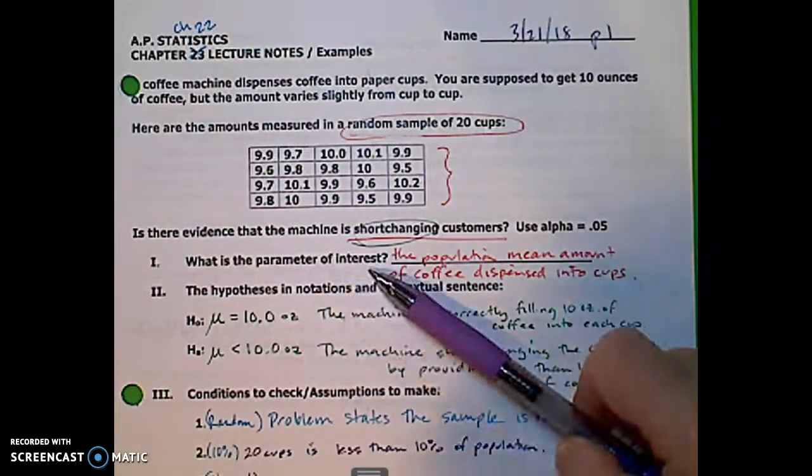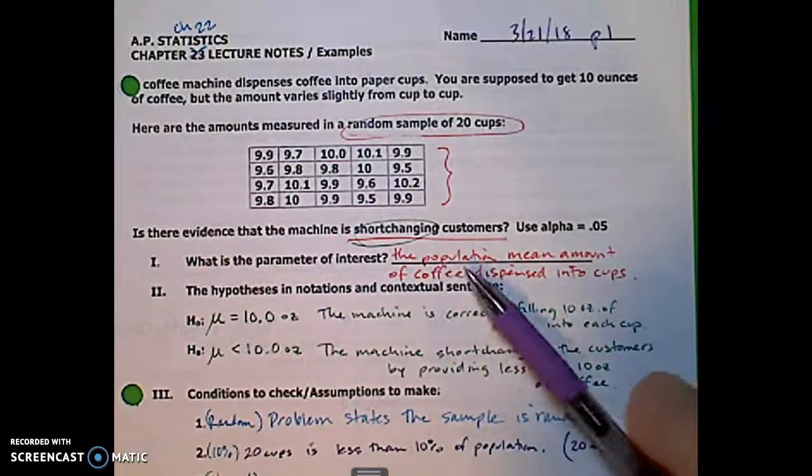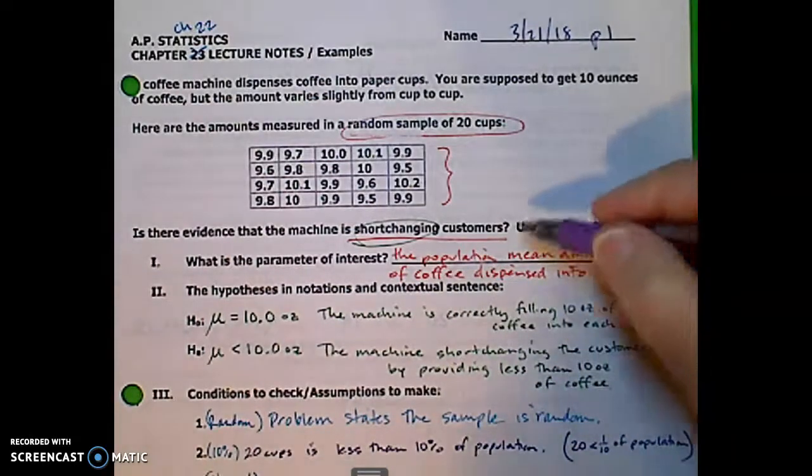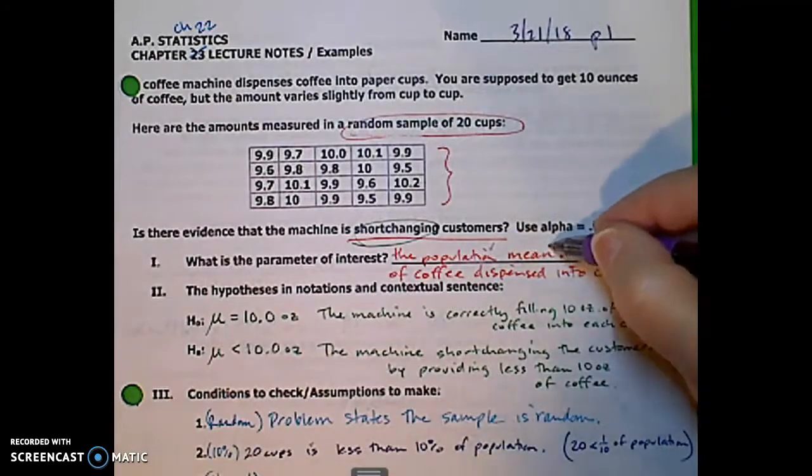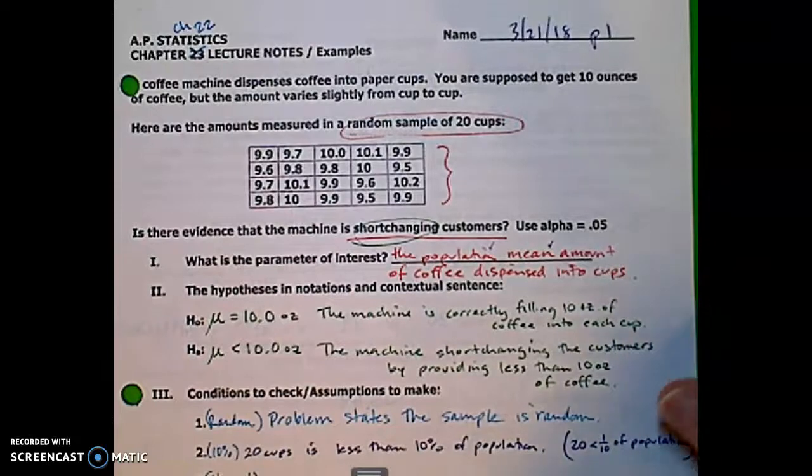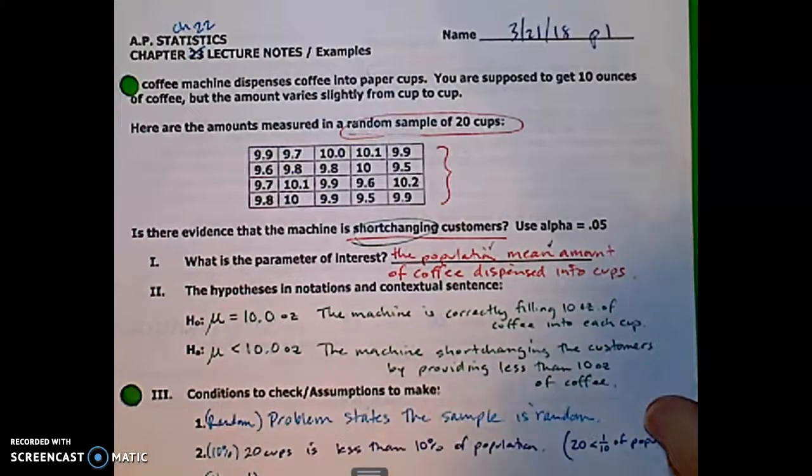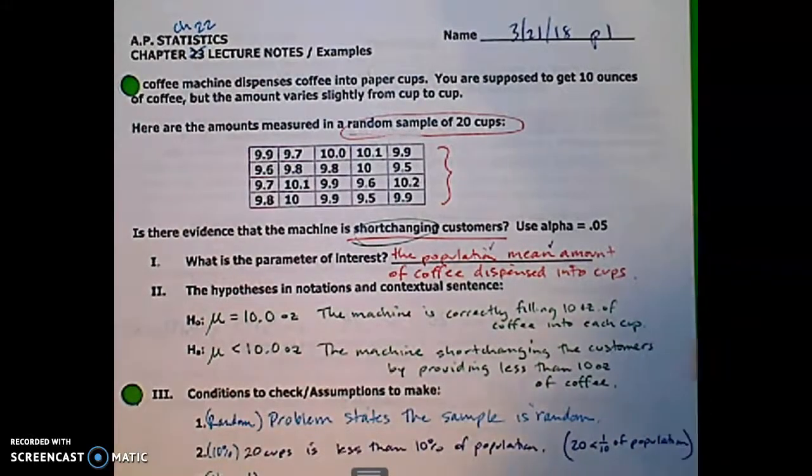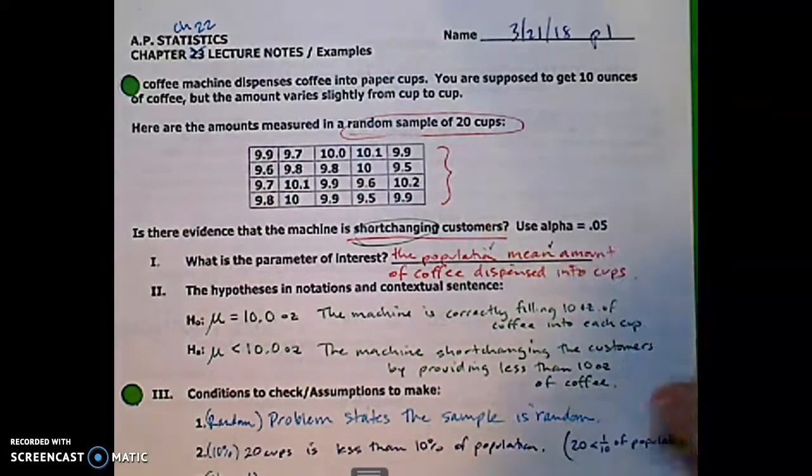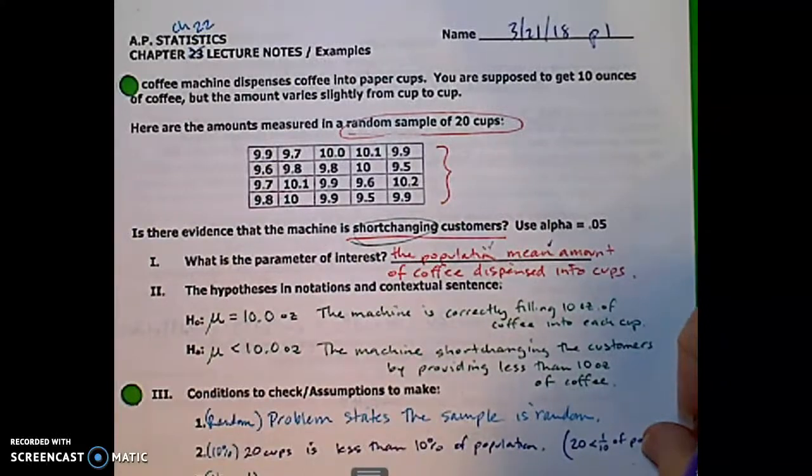So the parameter of interest we need to define. The parameter of interest is the population mean amount of coffee dispensed into cups. So we're talking about a population and we're talking about an average. So here we're doing a hypothesis test. Yesterday we were doing confidence intervals. Now we want to test the hypothesis about is there or is there not 10 ounces of coffee in each cup that is dispensed.